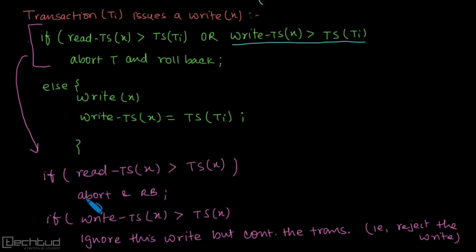So if read timestamp is greater than timestamp of the transaction, first one, then we abort it. So what I mean to say is, for this X, if read timestamp, it also has write timestamp.